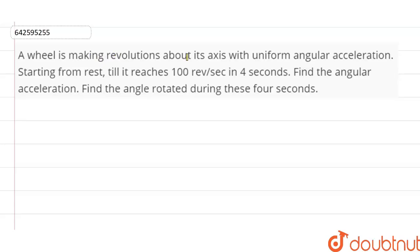A wheel is making revolutions about its axis with uniform angular acceleration starting from rest till it reaches 100 revolutions per second in four seconds. Find the angular acceleration.